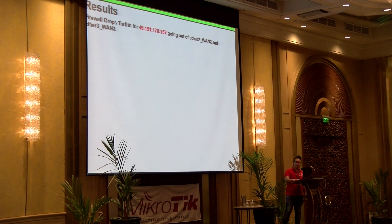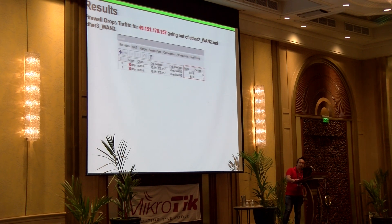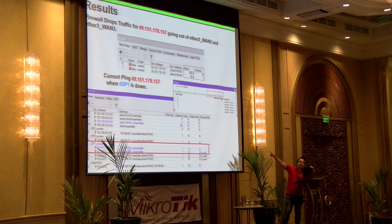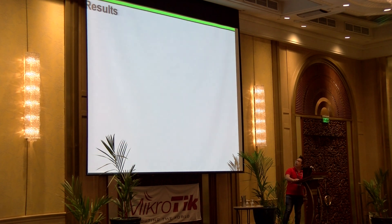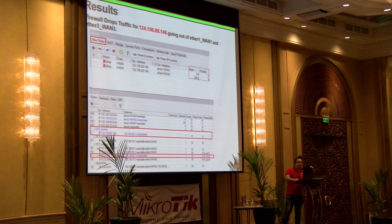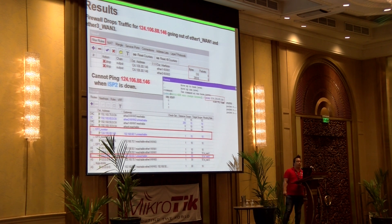So now the results: whenever you try to ping 49, even though ISP1 monitor is down, you cannot ping 49 anymore — because of the firewall filter. Same thing for 124: when you try to ping it and it tries to go out of ISP3, it will be dropped. Despite having your monitor IP unreachable, you could still not ping 124.